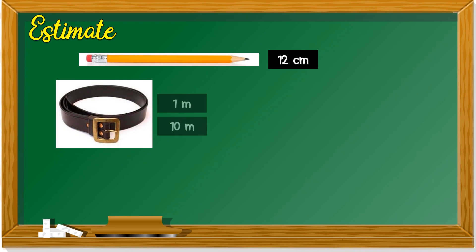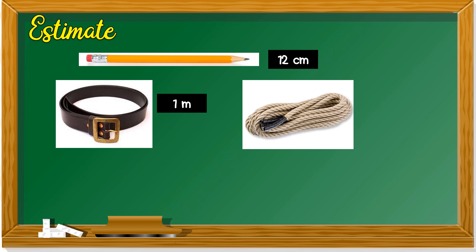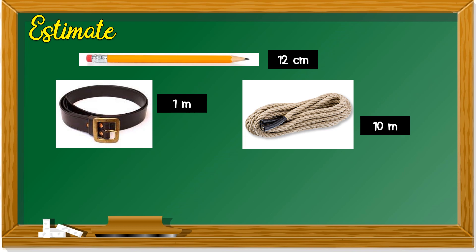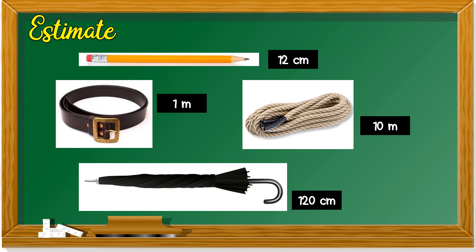How about this bell? Is it 1 meter or 10 meter? Yes, it's 1 because 10 meter is too long. How about this rope? It looks very long, right? Is it 1 meter or 10 meter? Yes, it's 10 meter — 1 meter is too short. How about this umbrella? Is it 15 cm or 120 cm? It's 120 cm because 15 cm is just the length of your ruler. Kalau 15 cm cuma panjang pembaris.